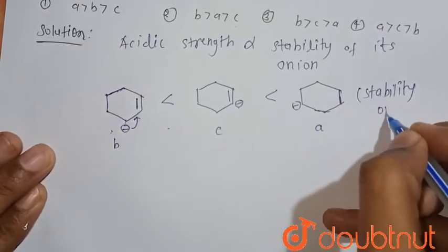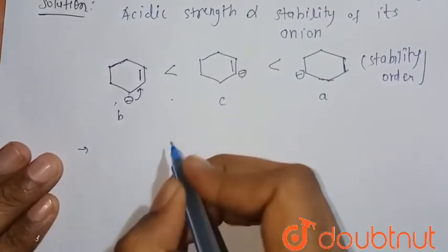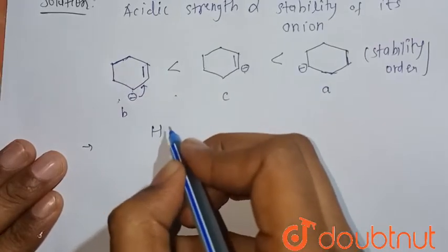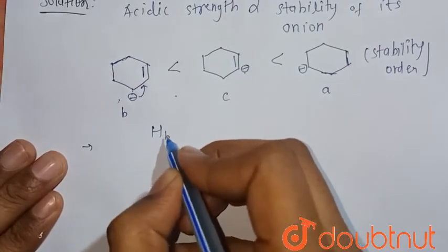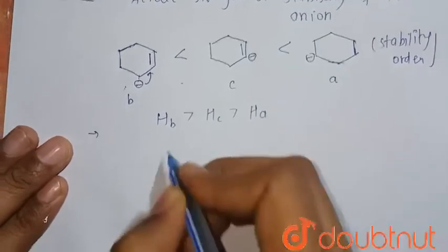So the correct acidity will be Hb will be the most acidic, then Hc, then Ha. Or simply we can write B > C > A. So this is the correct order.